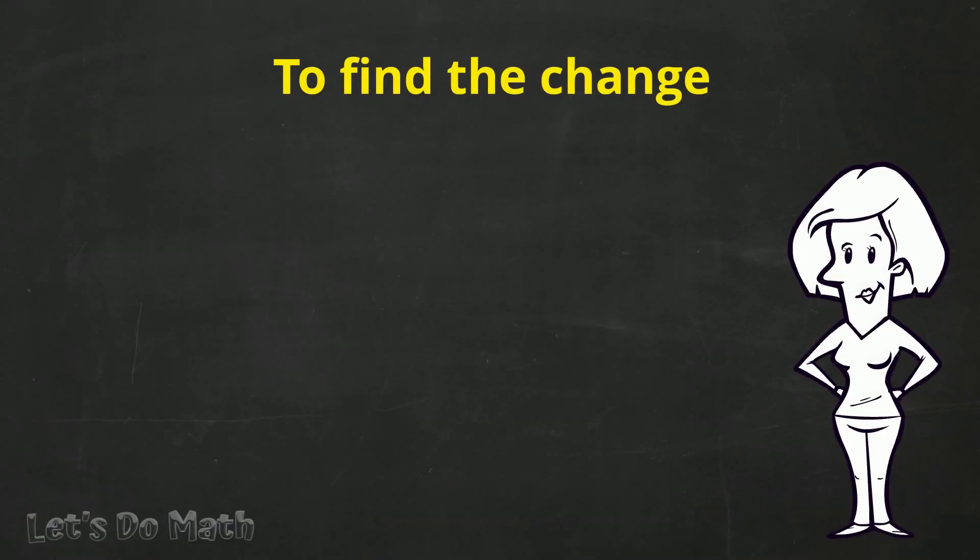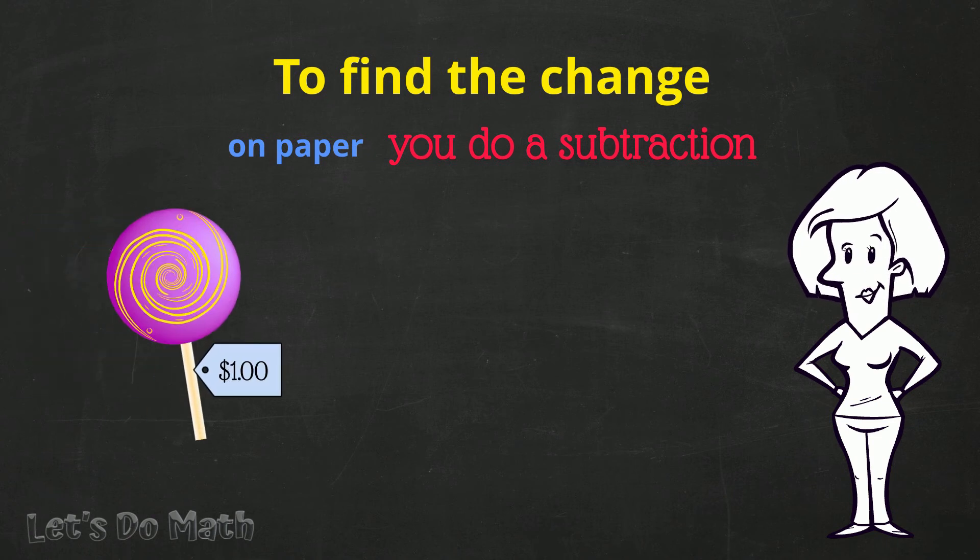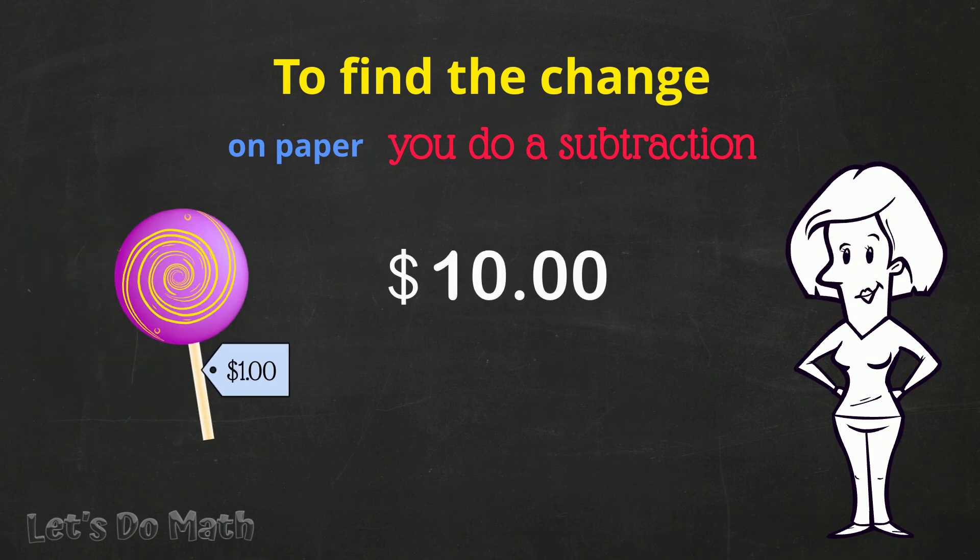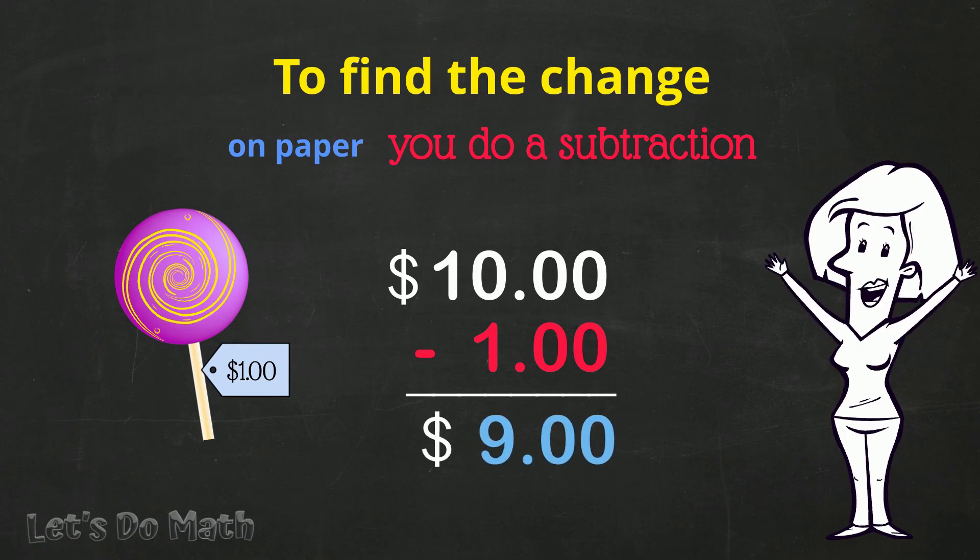To find the change on paper, you do a subtraction. Start with the money you pass to the cashier. Subtract the cost of the purchases, and that gives you the change.